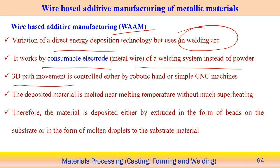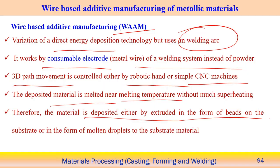Depending on the component shape, deposition is performed accordingly using either a robotic arm or CNC machines to control the welding arc movement and deposition path. The deposited material is melted near the melting temperature without much superheating, so control of metal transfer is important. It is also possible to extrude metal in the form of a bead onto the substrate rather than having free-falling liquid droplets.